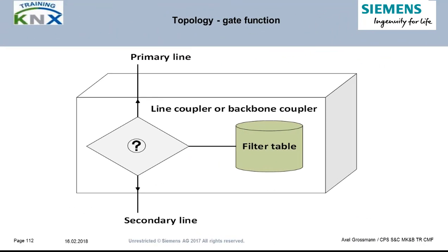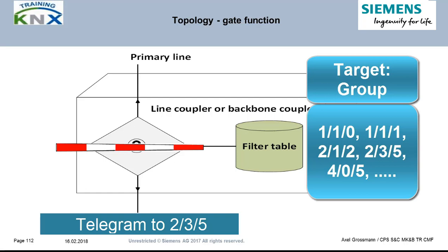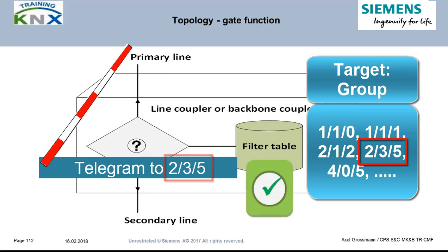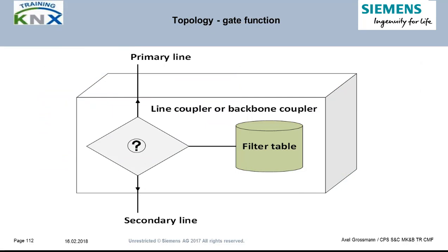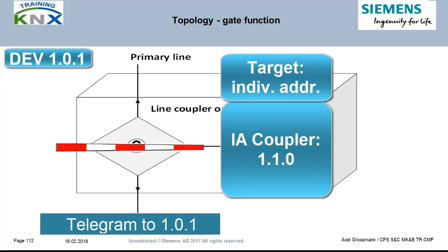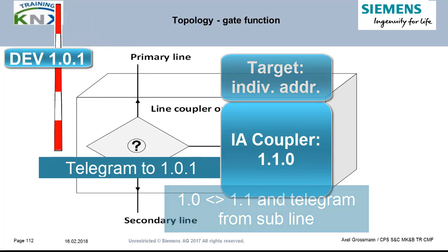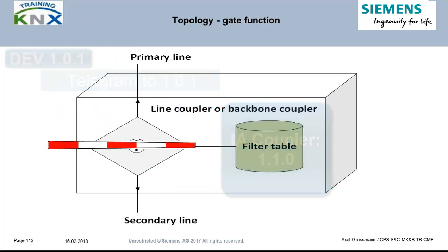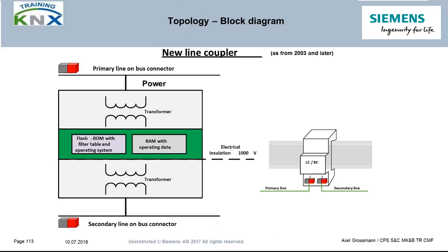The address 0.0.0 is a special address to be discussed later. Line and backbone couplers are like border guards of the KNX system. Their task is to check all incoming telegrams — first if they are valid at all, and secondly if they are allowed to be forwarded to the other side or must be denied. To filter telegrams directed to individual devices using the individual address as target, the coupler uses its own individual address as reference. For group telegrams, ETS calculates a filter table which is downloaded to the coupler.